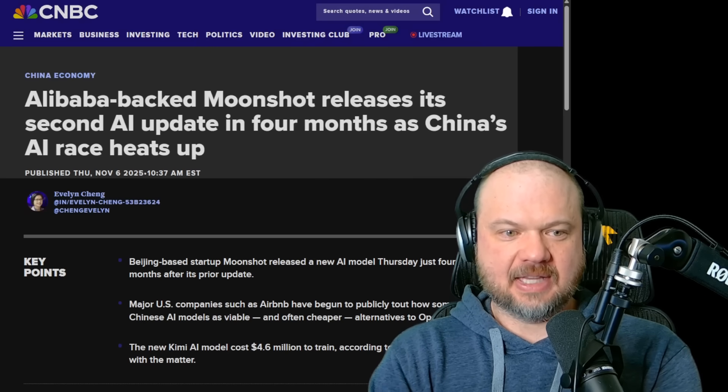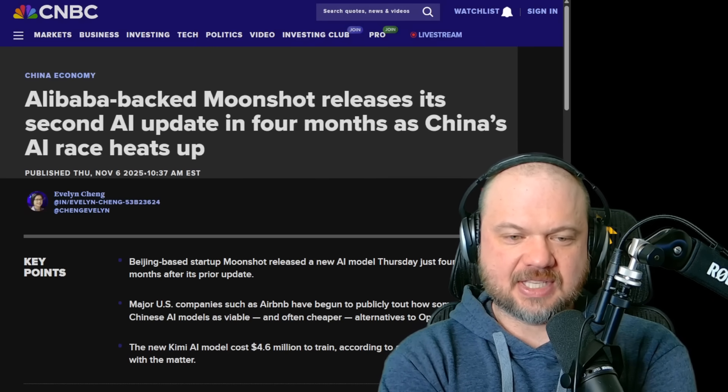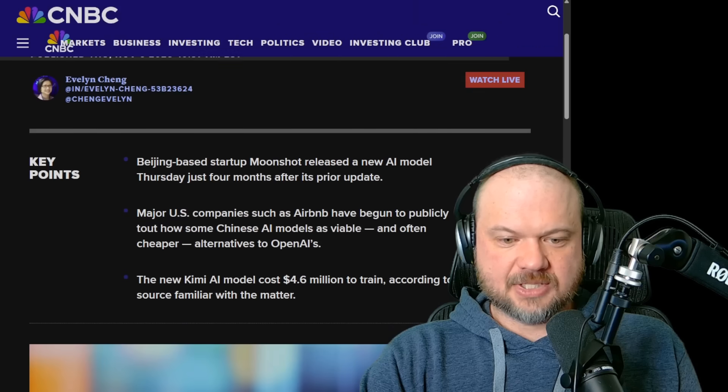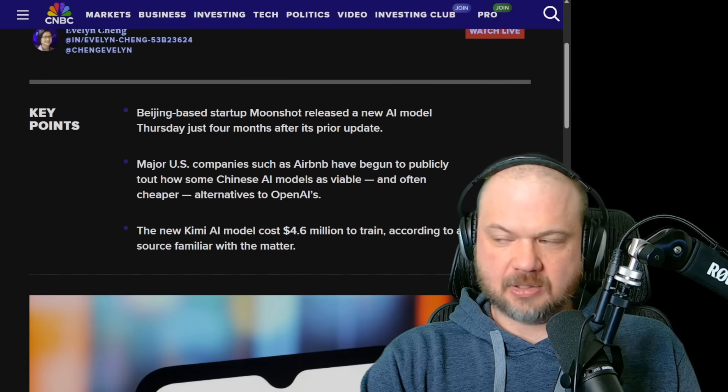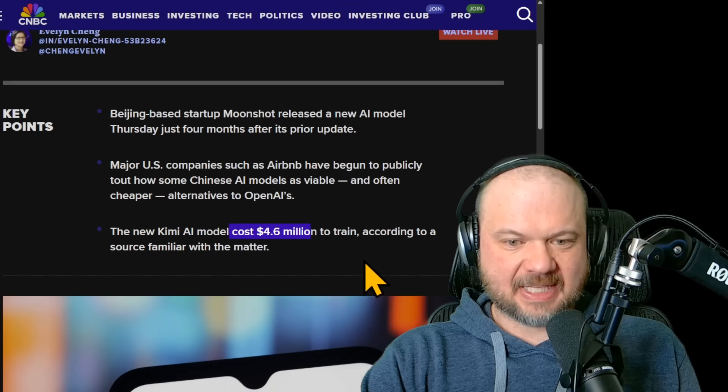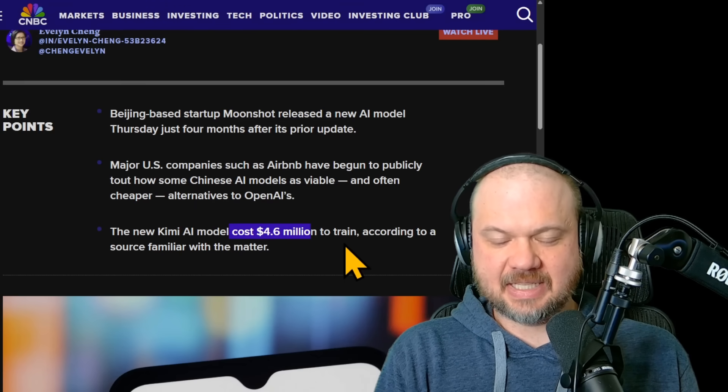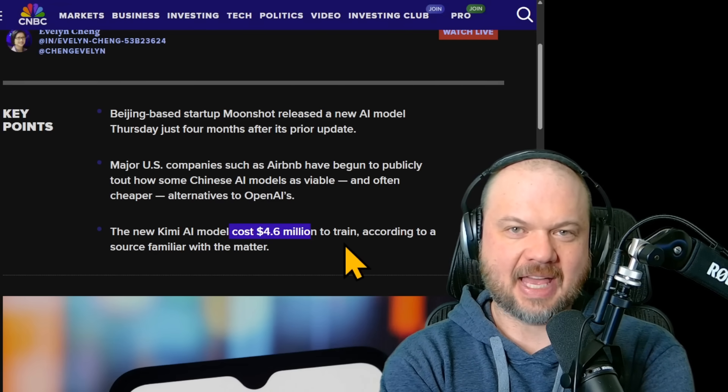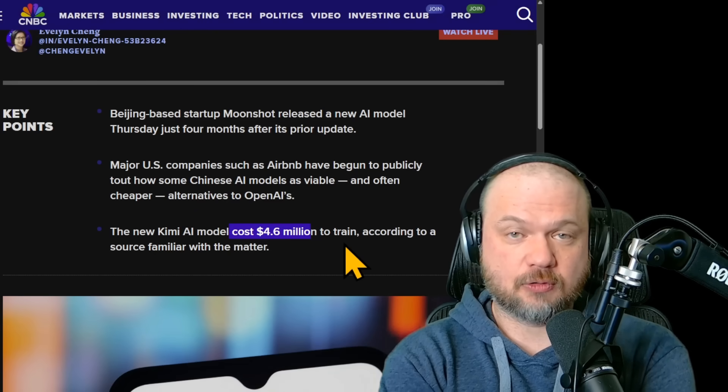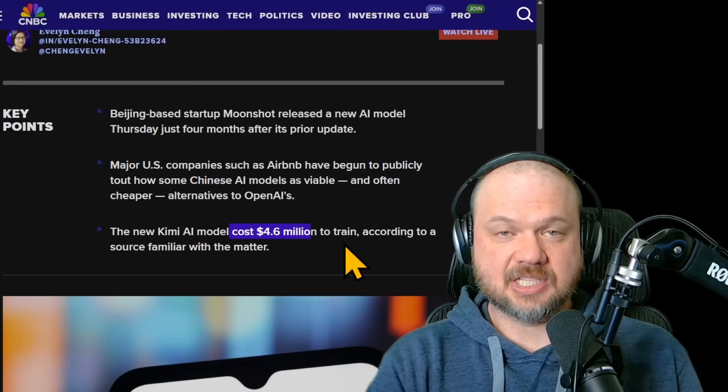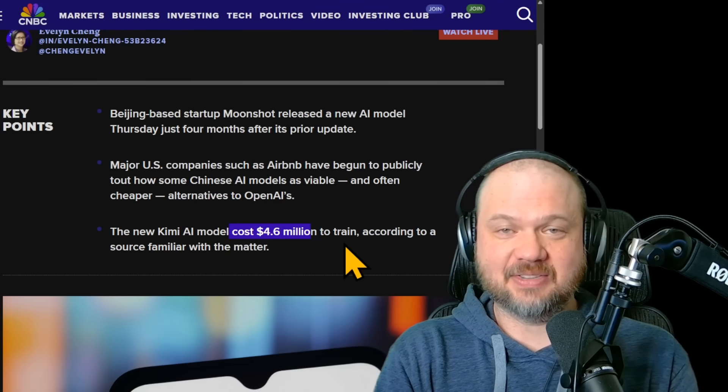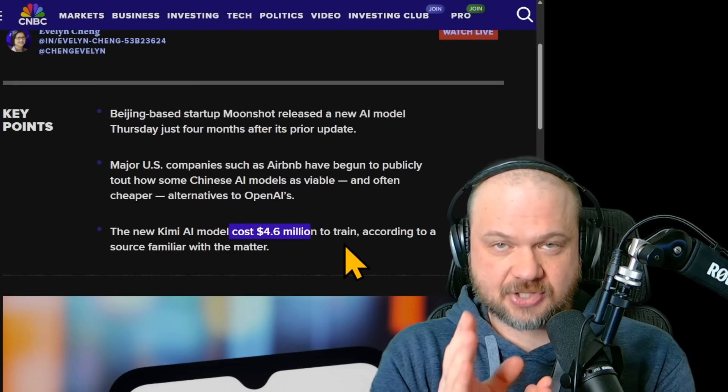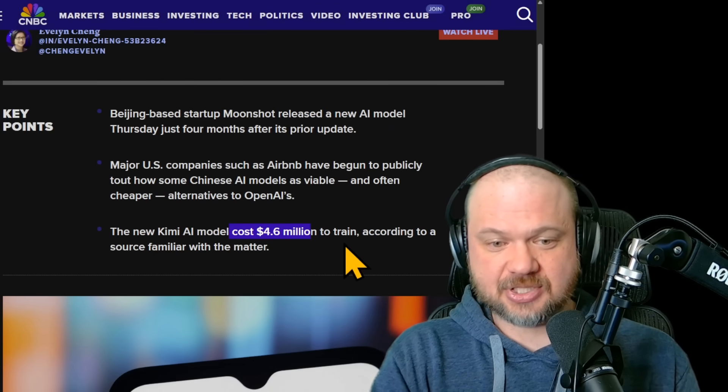According to CNBC, the Alibaba-backed Moonshot releases its second AI update in four months as China's AI race heats up. And as you can see here, they're saying that the new Kimi AI model costs just $4.6 million to train. Now, it's important to understand that if we can trust those numbers, that doesn't mean that any old lab can just make a model of this quality for $4.6 million. There's tons of other costs that go into it. Before it, you have to have a lab. You have to have some infrastructure already in place, but the cost of training that particular model is just under $5 million.